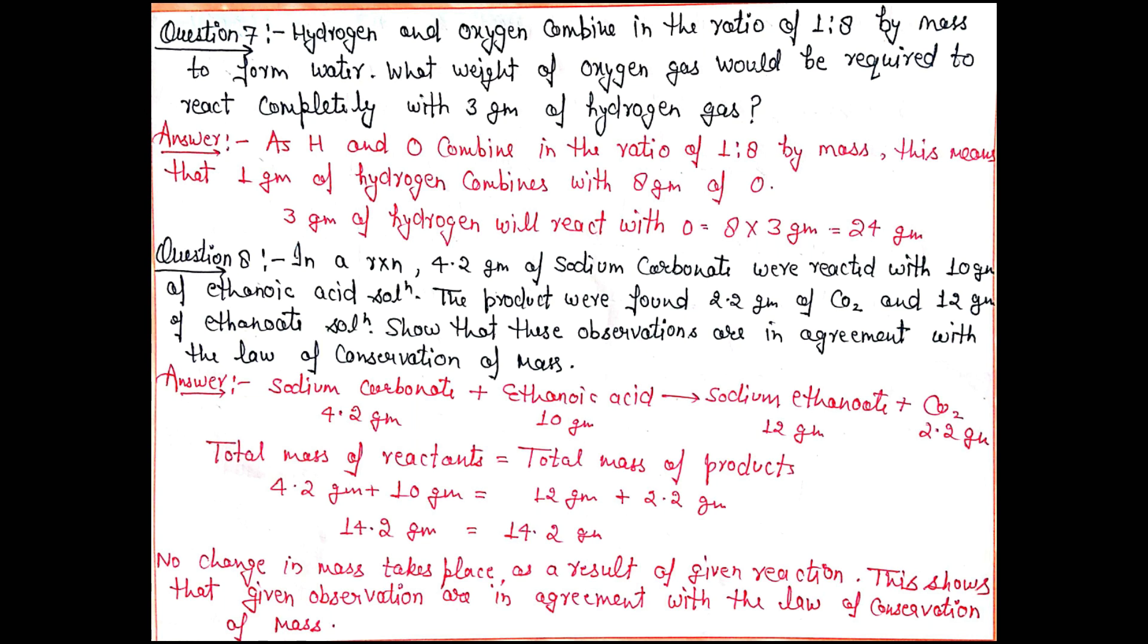Question 8: A very important question. In a reaction, 4.2 grams of sodium carbonate were reacted with 10 grams of ethanoic acid solution. The products were 2.2 grams of carbon dioxide and 12 grams of sodium ethanoate solution. Show that these observations are in agreement with the law of conservation of mass. For numerical problems on the law of conservation of mass, it's very easy. First write the complete balanced equation with their masses. According to the law of conservation of mass, total mass of reactants always equals total mass of products. We calculate the total mass of reactants and total mass of products. If both are equal, then this reaction is in agreement with the law of conservation of mass.